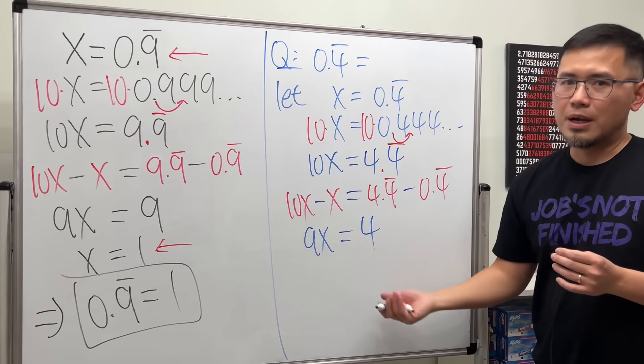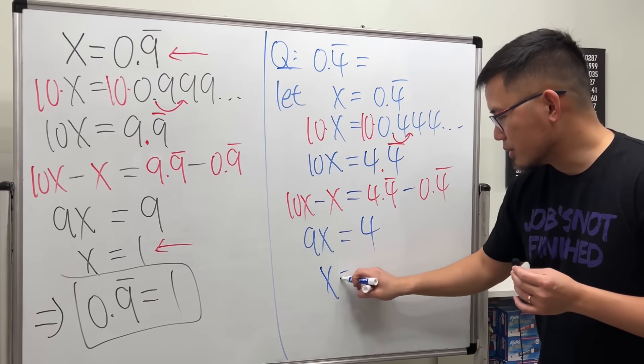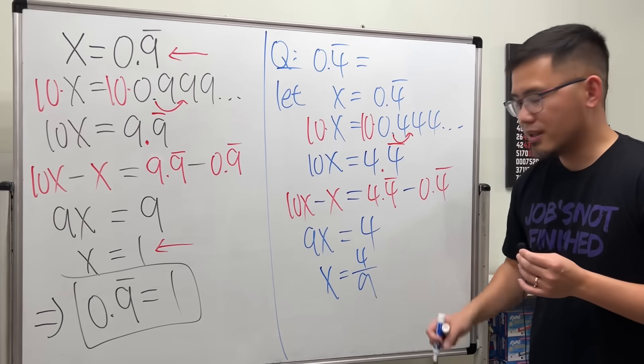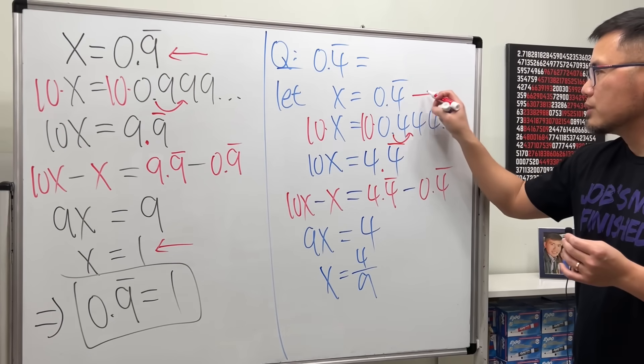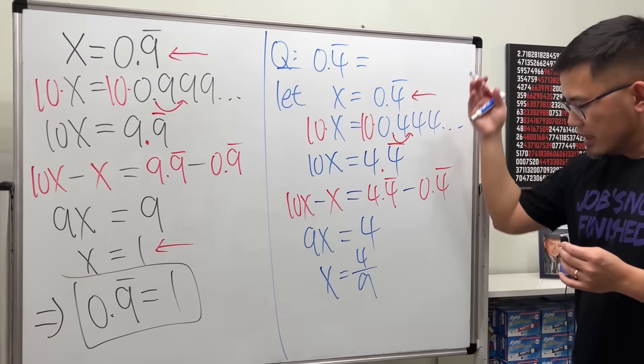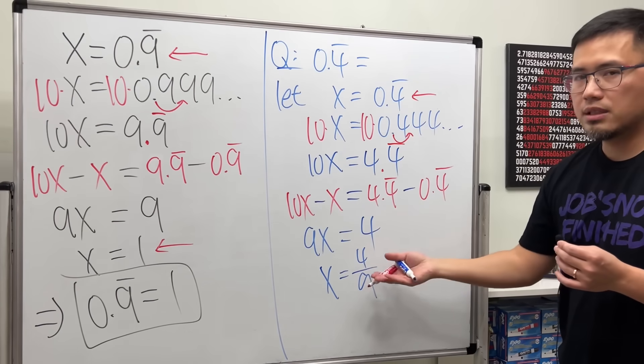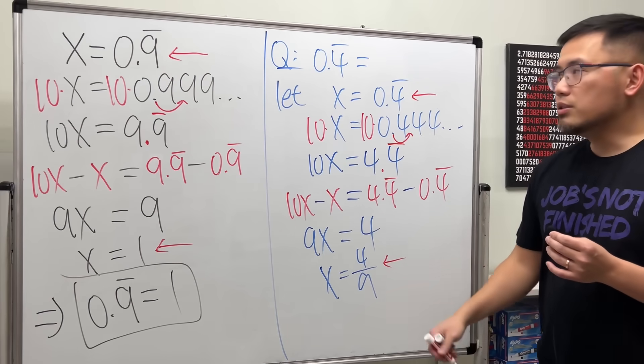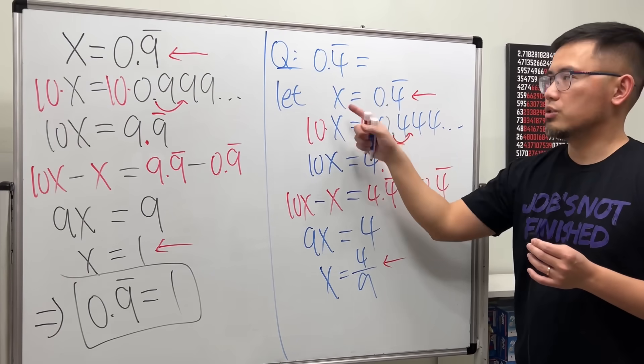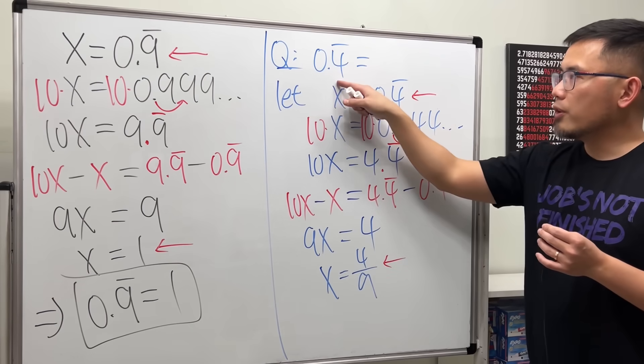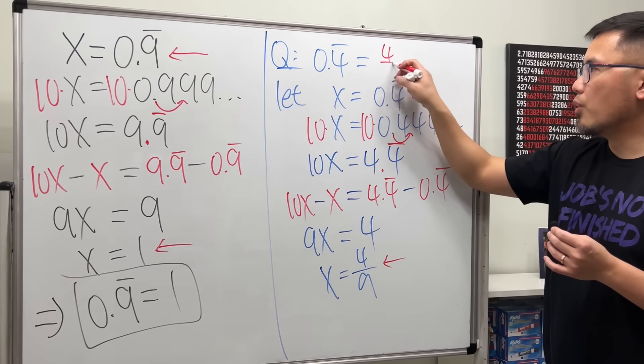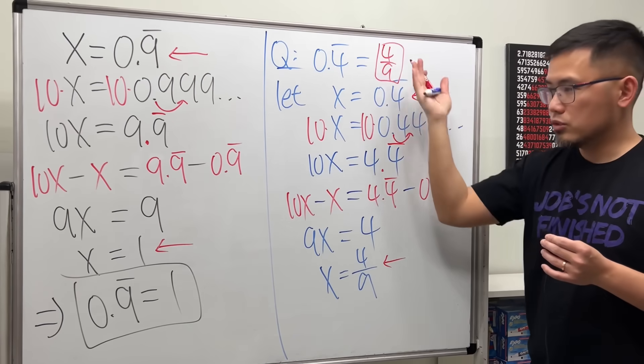And finally, divide both sides by 9. We get x equals 4 over 9. What's x? We say x is equal to 0.4 repeating earlier, and then after all this, we end up with x equals 4 over 9. So as you can see, this is how we can change from a repeating decimal number to a fraction. 0.4 repeating equals 4 over 9. Just like that.